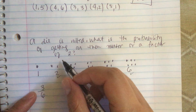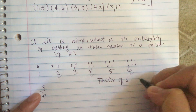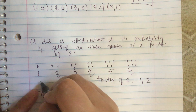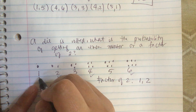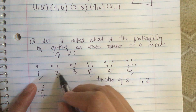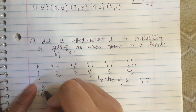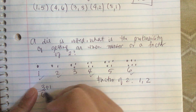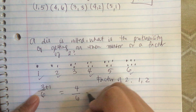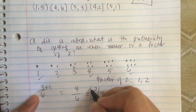Now for a factor of two: the factors of two are one and two. One is an additional favorable case, and two we already counted, so we add one more. That gives us four over six, which equals two thirds.